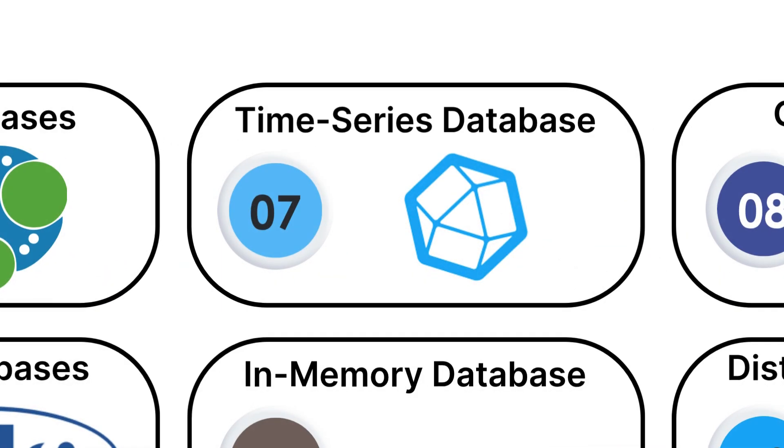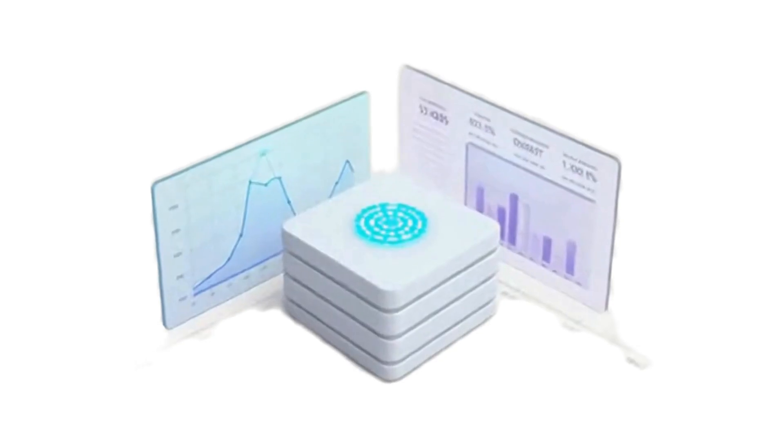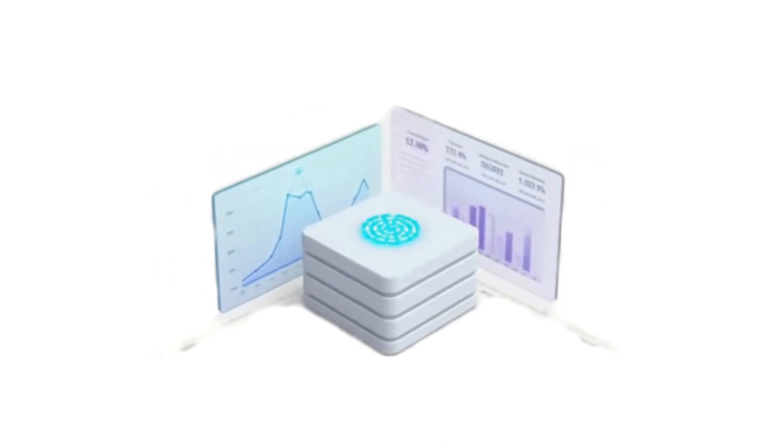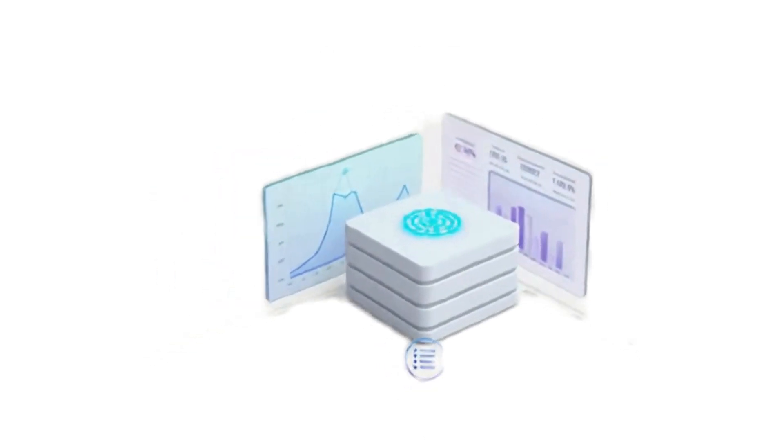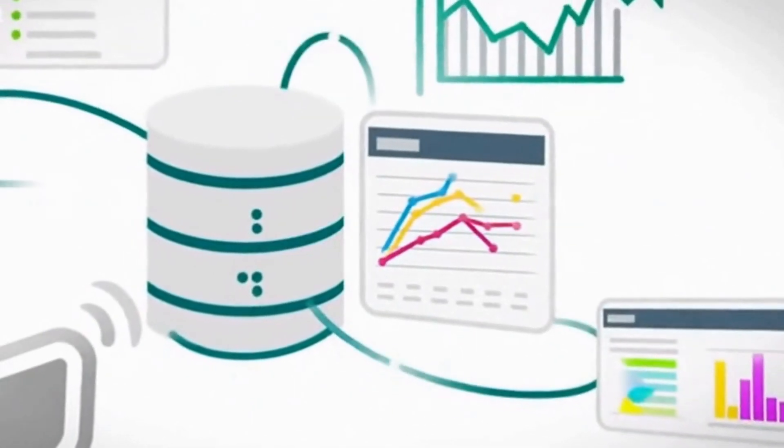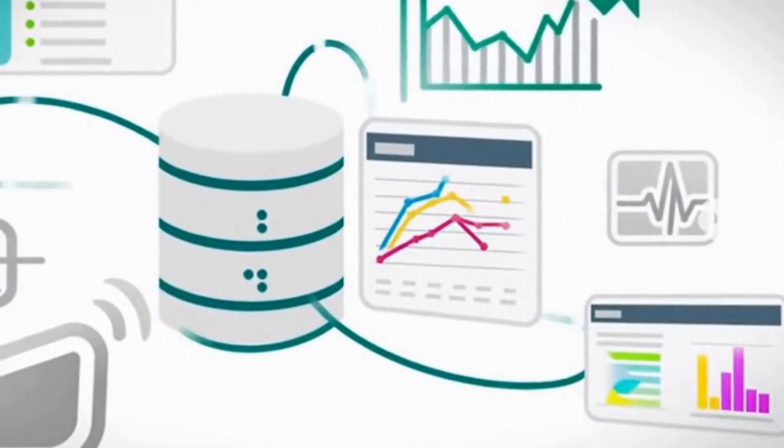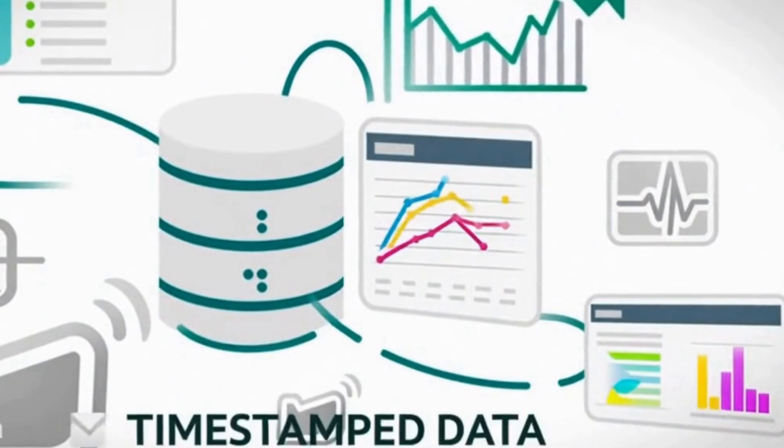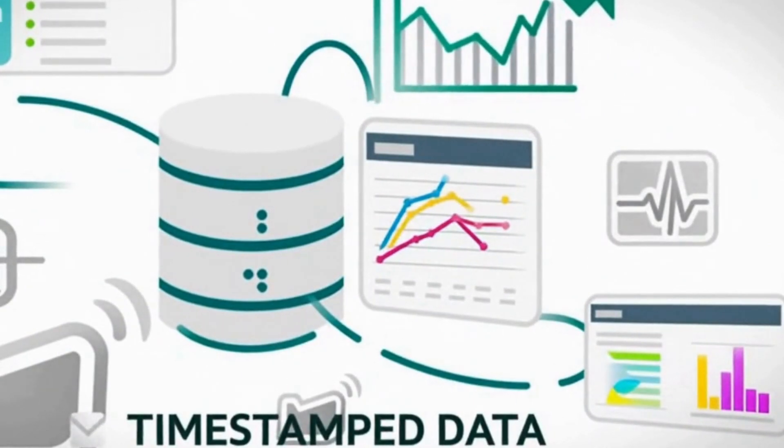Number seven, time series databases. Time series databases are specialists designed specifically for data that changes over time. Think of them like detailed logbooks that record what happens when. Every piece of data includes a timestamp.